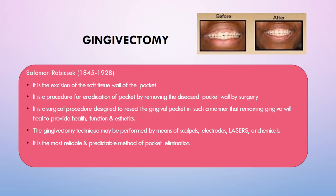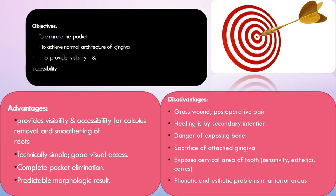Objectives of gingivectomy: to eliminate the pocket, to achieve normal gingival architecture, and to provide accessibility. The pseudo pocket covers fruit debris and calculus; by eliminating the pocket, access to the root surface for proper scaling is gained. Advantages include: provides visibility and accessibility for calculus removal and root smoothening; technically simple; good visual access; complete pocket elimination; and predictable morphologic results.